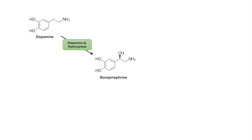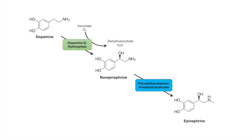Once you have dopamine, it can go through another hydroxylation reaction to produce norepinephrine — the only difference is an additional hydroxyl group on norepinephrine compared to dopamine. This hydroxylation is carried out with the help of ascorbate (vitamin C), which gets processed into dehydroascorbate in the reaction. Norepinephrine can then be methylated by the enzyme phenylethanolamine N-methyltransferase to form epinephrine, using the cofactor S-adenosylmethionine (SAM). SAM donates a methyl group to norepinephrine, becoming S-adenosylhomocysteine, which can be recycled back into SAM via the activated methyl cycle.